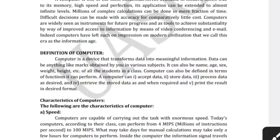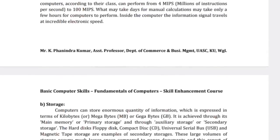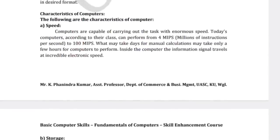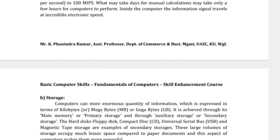A computer stores data, accepts data, retrieves data — retrieve means nothing but backup — and it will print the results. The characteristics of computer: the first characteristic is speed. Compared to human work, the computer works at a much higher speed.